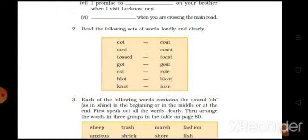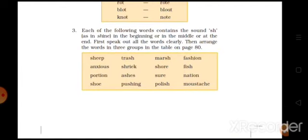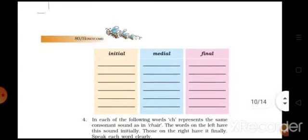Now the second question is: Read the following sets of words loudly and clearly. Caught, coat, coast, cost, tossed, toast, got, goat, rot, wrote, blot, bloat, not, note. Each of the following words contains the sound 'sh' as in 'shine' in the beginning, middle, or end. First speak out all the words clearly, then arrange the words in three groups in the table on page 80.